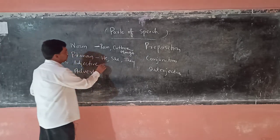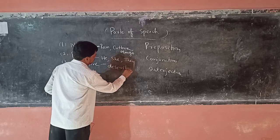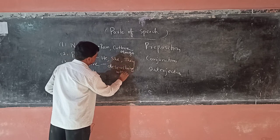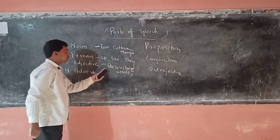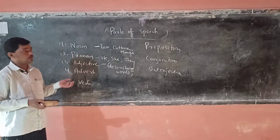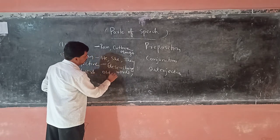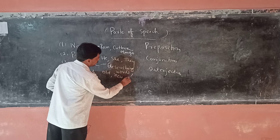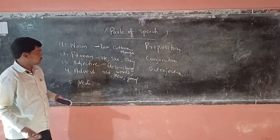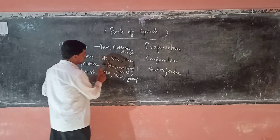Adjective is a describing word. Describing words describe a person, describe a noun, describe a thing. For example: old, new, good — there are so many adjective words like these.